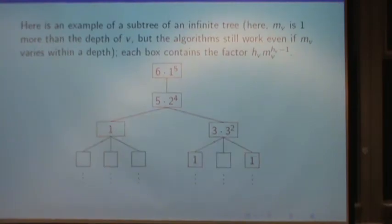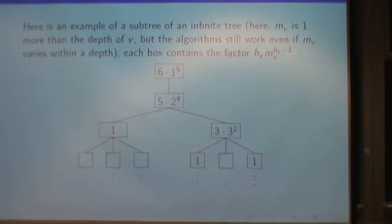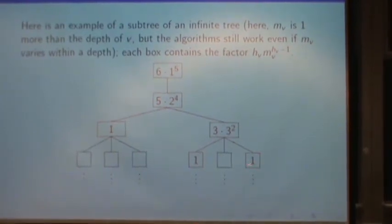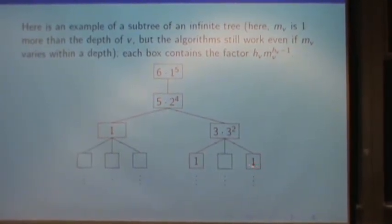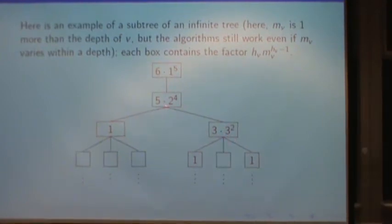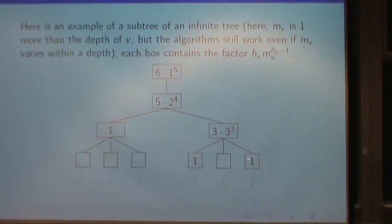If you go back here, the probability of adding this vertex to the tree was 1/6, because this vertex had probability 1/2, because this vertex had probability 1, and there were three slots for children here.